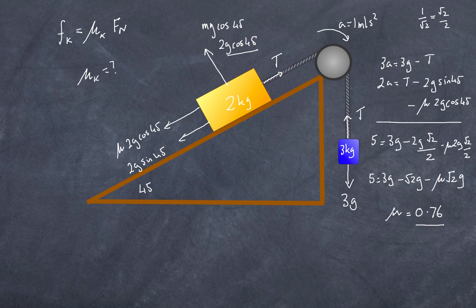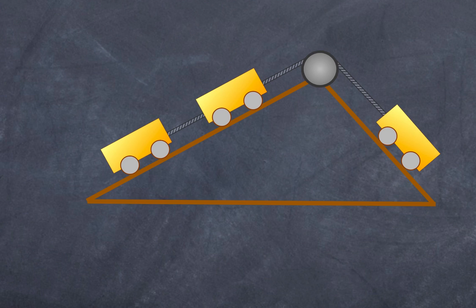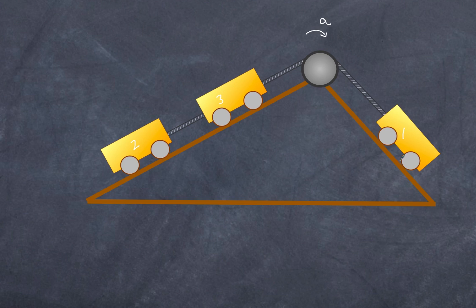Even a problem like this shouldn't be too hard once you understand the process. Set out Newton's second law for each object and you can solve it. Now I'm going to deliberately choose values to show you how the determination of your direction really isn't a problem. I'll make the positive direction as shown, with three objects: 2 kg, 3 kg, and 1 kg.